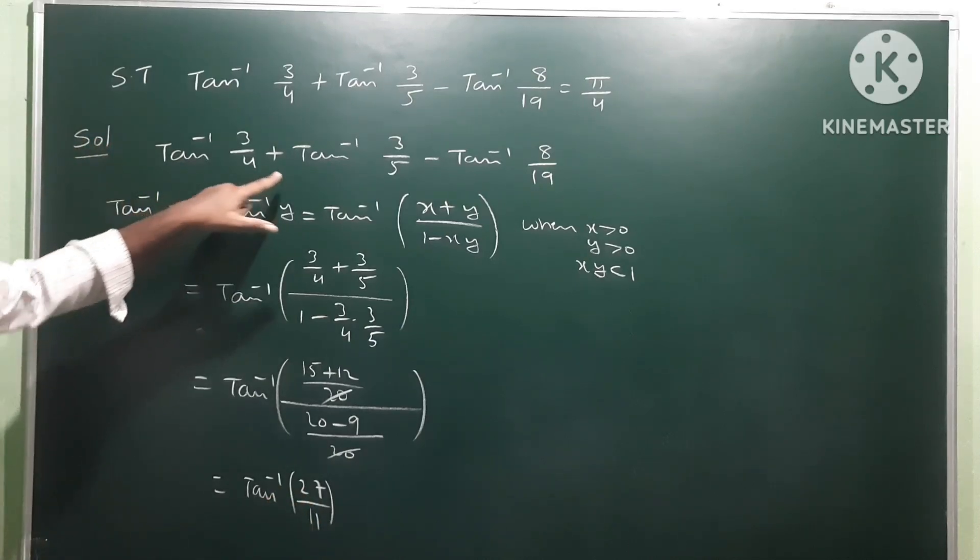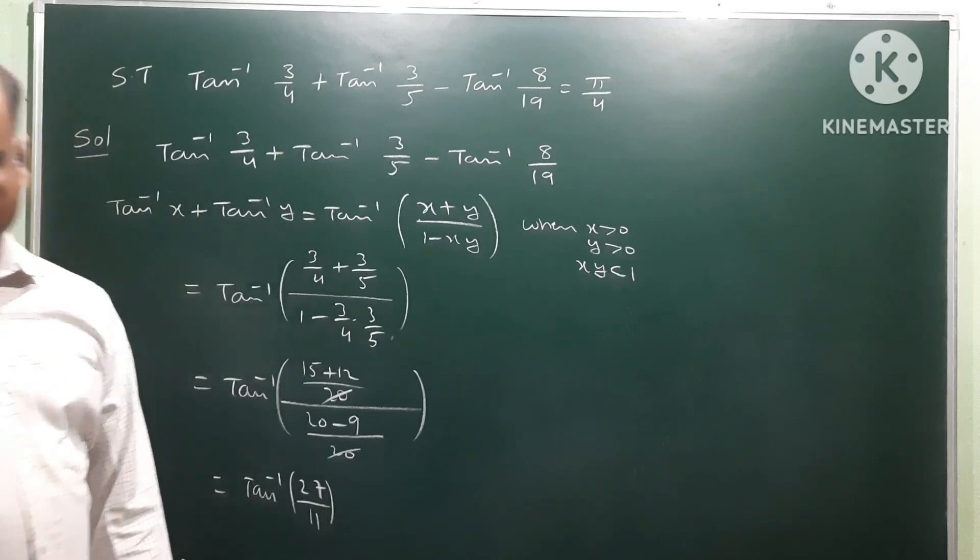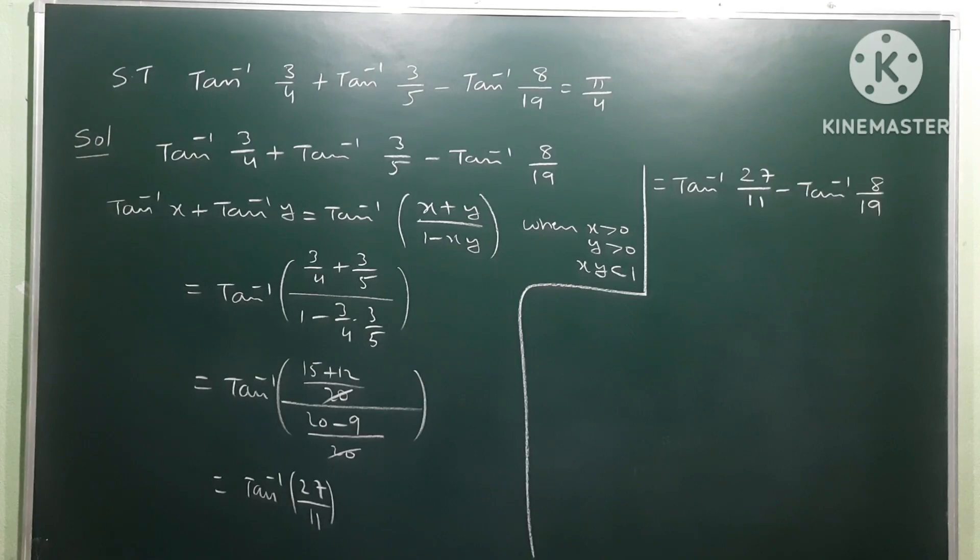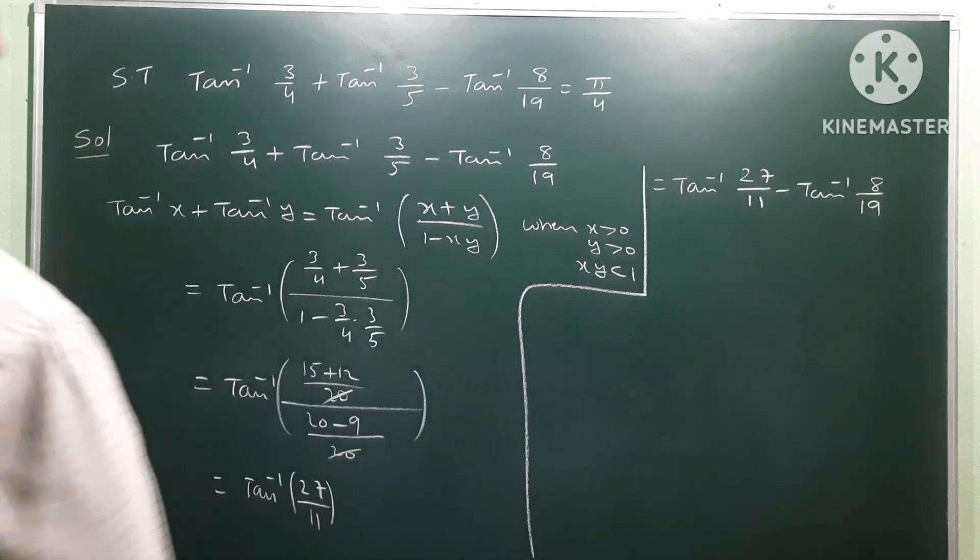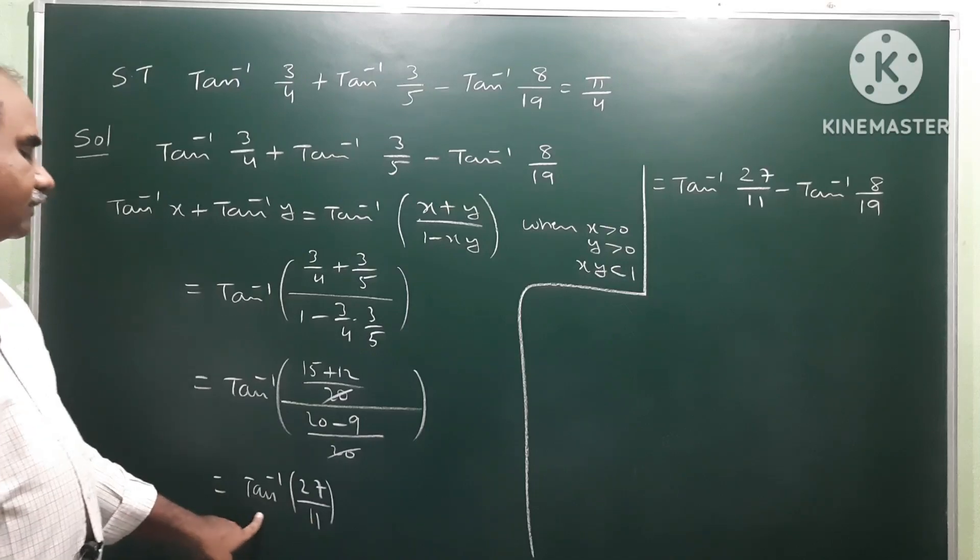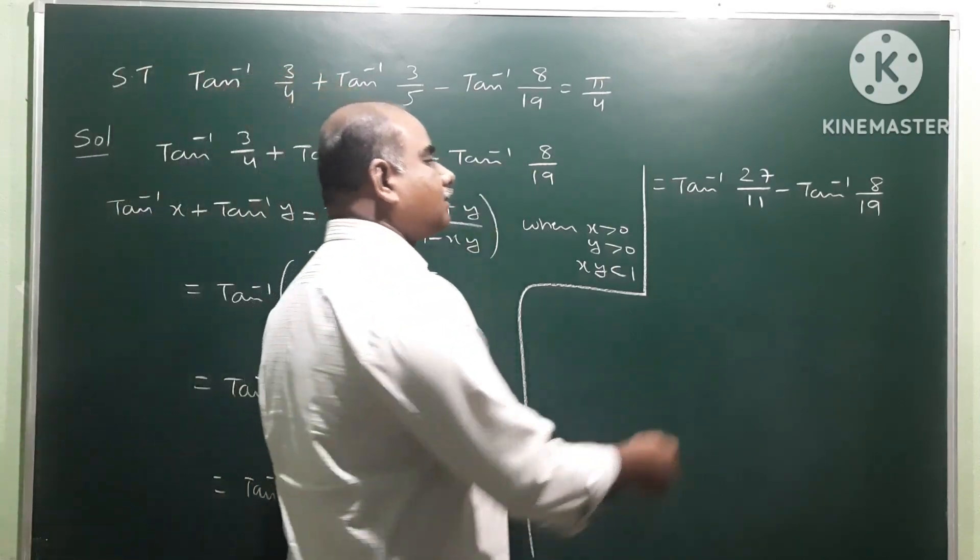Next, first two terms answer is tan inverse 27 by 11 minus tan inverse 8 by 19. So this